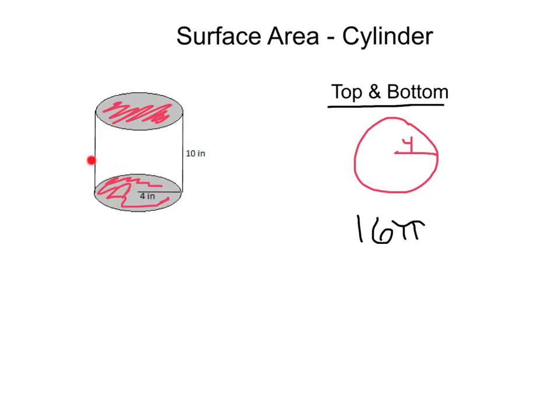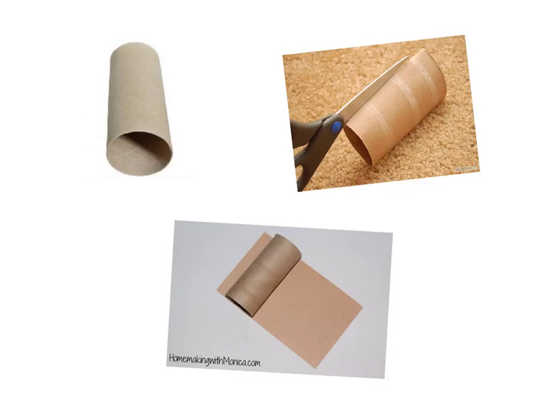Now this is an interesting part here. We've got kind of a circular shape that's forming the body of the cylinder. To better understand this, let's take a second and think about toilet paper, or a toilet paper roll for that matter.